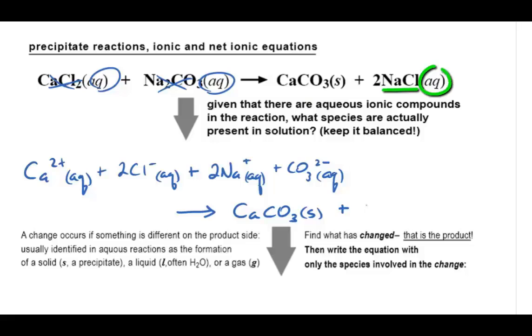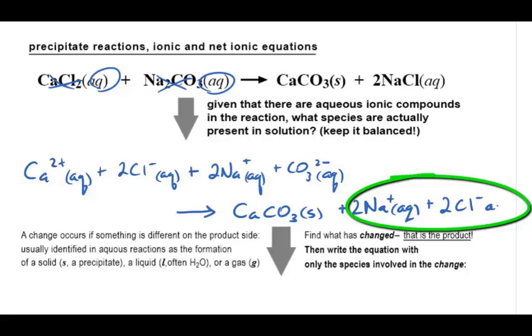And finally, the sodium chloride product is aqueous, and so the sodium chloride exists as individual sodium ions and chloride ions. Notice the coefficient here is 2, and so for the balanced equation, there are two sodium ions and two chloride ions.